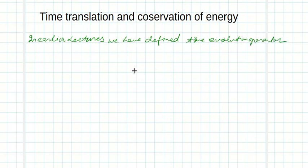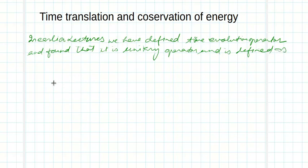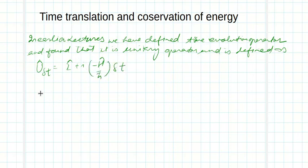We found that it is a unitary operator, and it is defined as: U(Δt) = I + (−iH/ℏ)Δt.